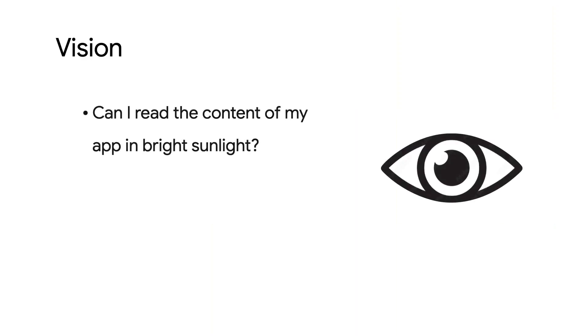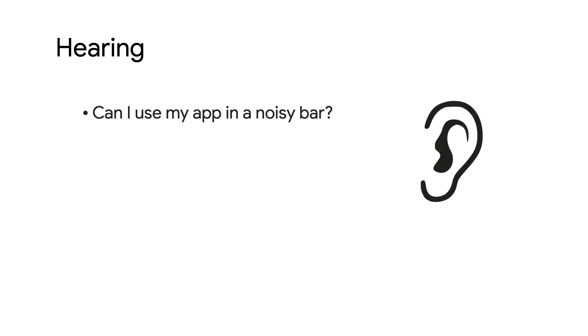If you have difficulty relating to users with permanent and temporary disabilities while designing your product, ask yourself the following questions. For vision: Can I read the contents of my app in the sunlight? Is the text large enough? Is the font clear? For hearing: Could I still use my app in a noisy bar?